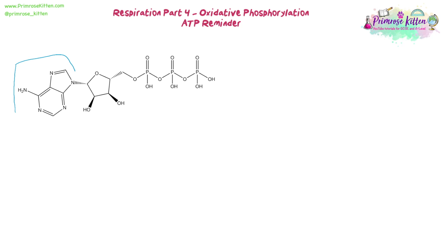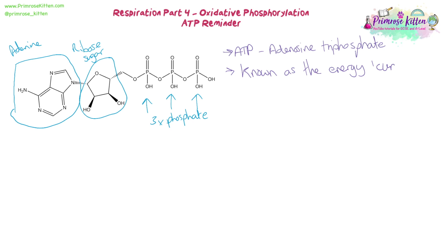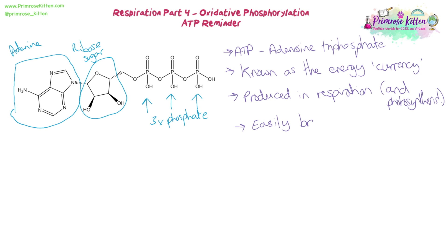We have a nitrogenous base — the adenine — we have a ribose sugar, and then we have three phosphate molecules joined in series. This structure is what makes ATP technically a type of nucleotide. It is known as ATP, adenosine triphosphate, because it has three phosphates. It's often referred to as the energy currency because, like money, it is exchanged for energy-requiring processes. It's produced in respiration and in photosynthesis. It can easily be broken down and then remade — broken down where it's needed to release energy for processes like active transport and building of molecules.